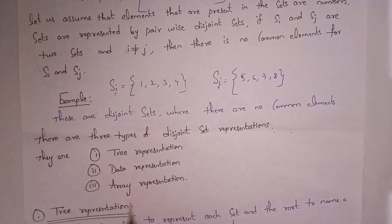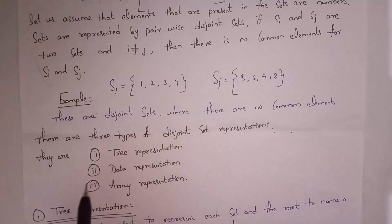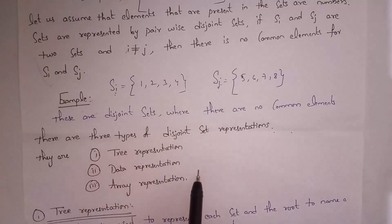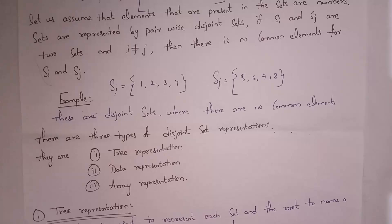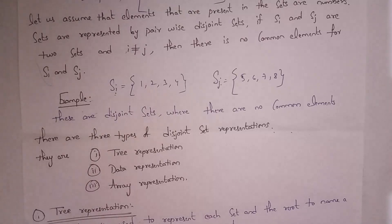We can represent disjoint sets in three ways: first by using tree representation, second by using data representation, and third by using array representation. I will first explain how to represent disjoint sets using tree representation.